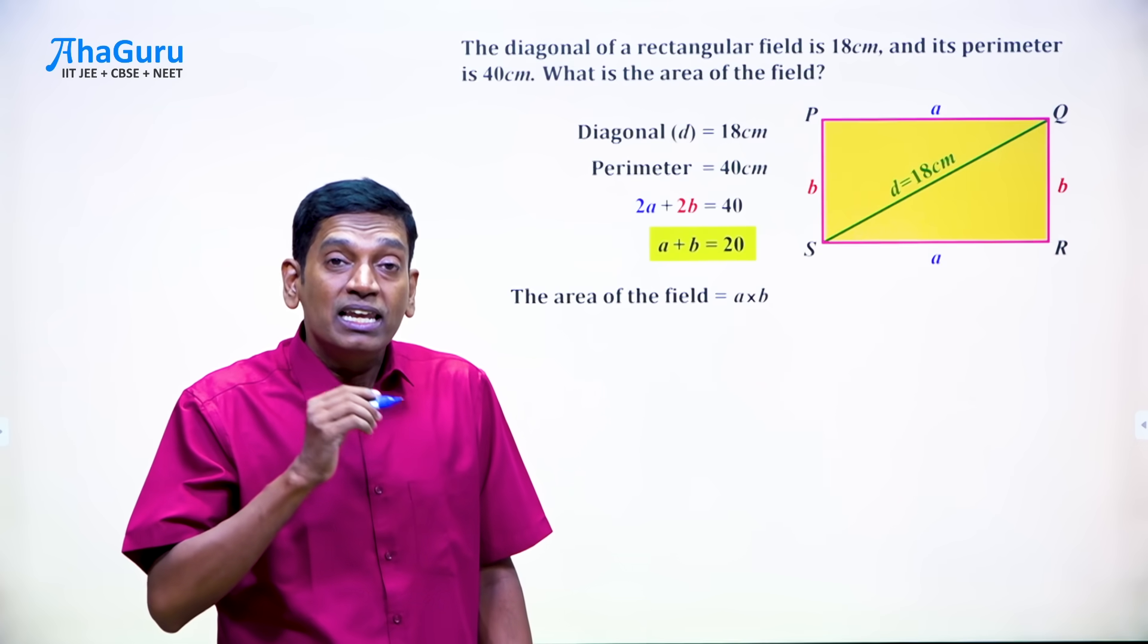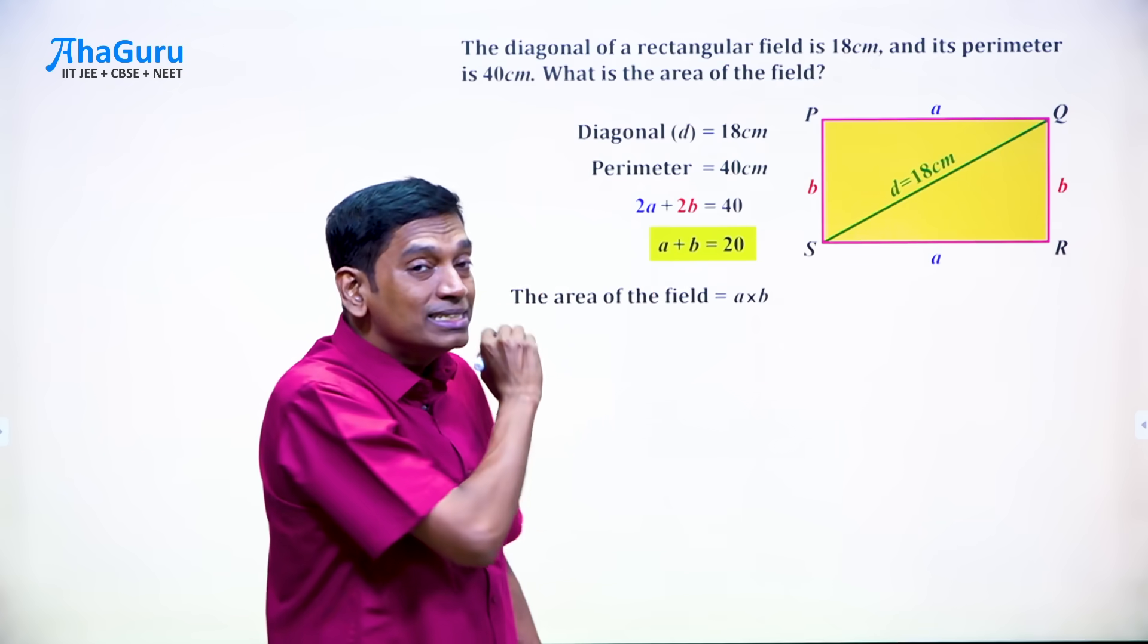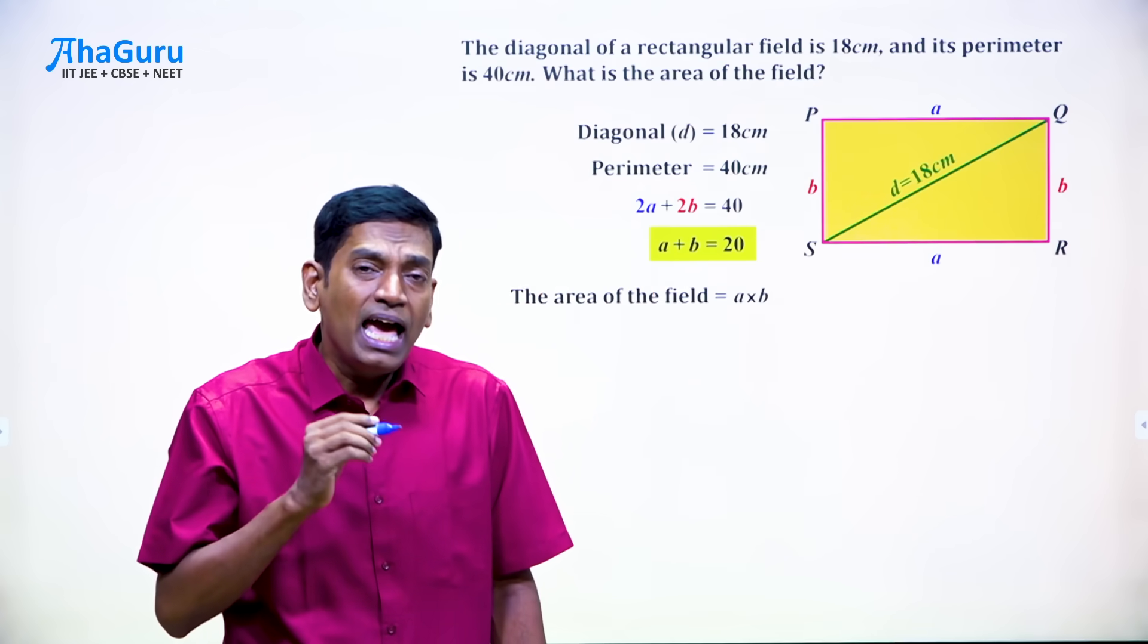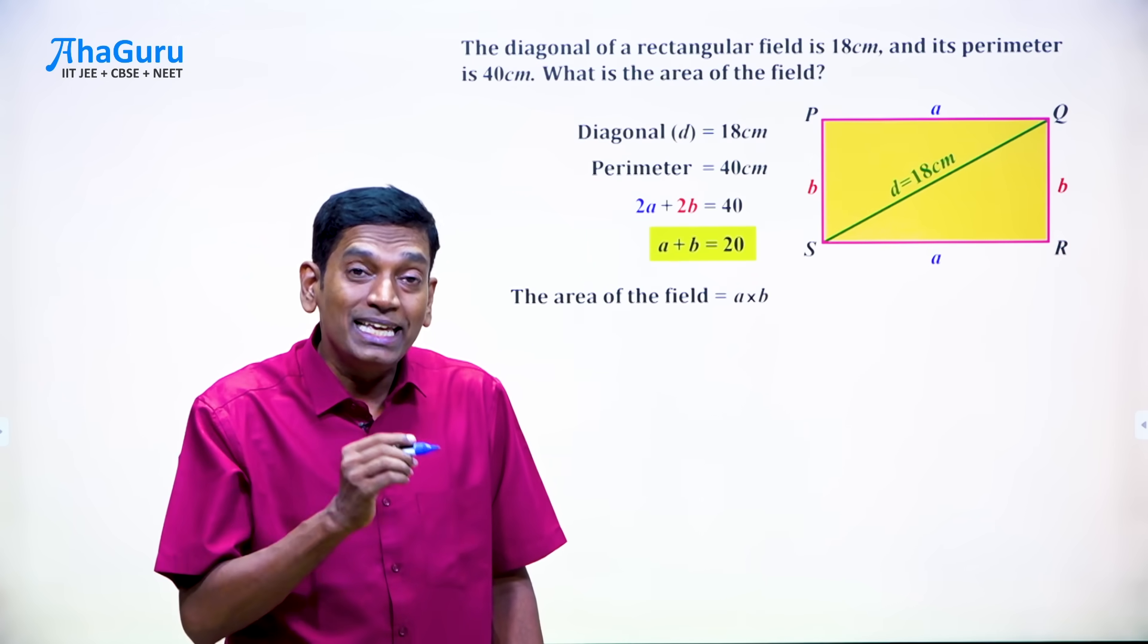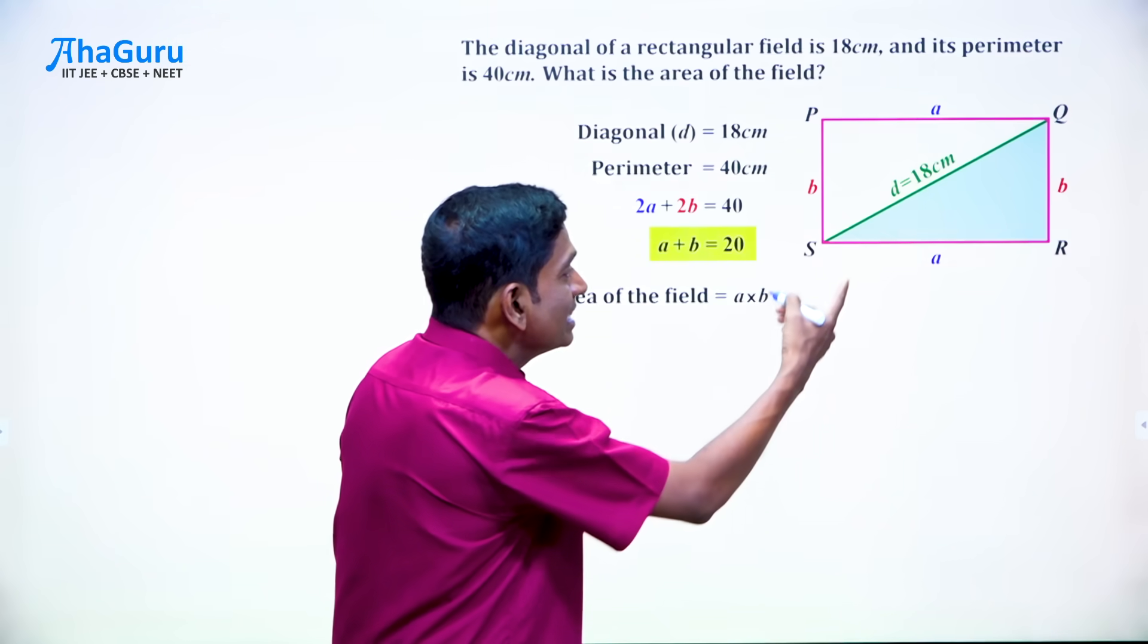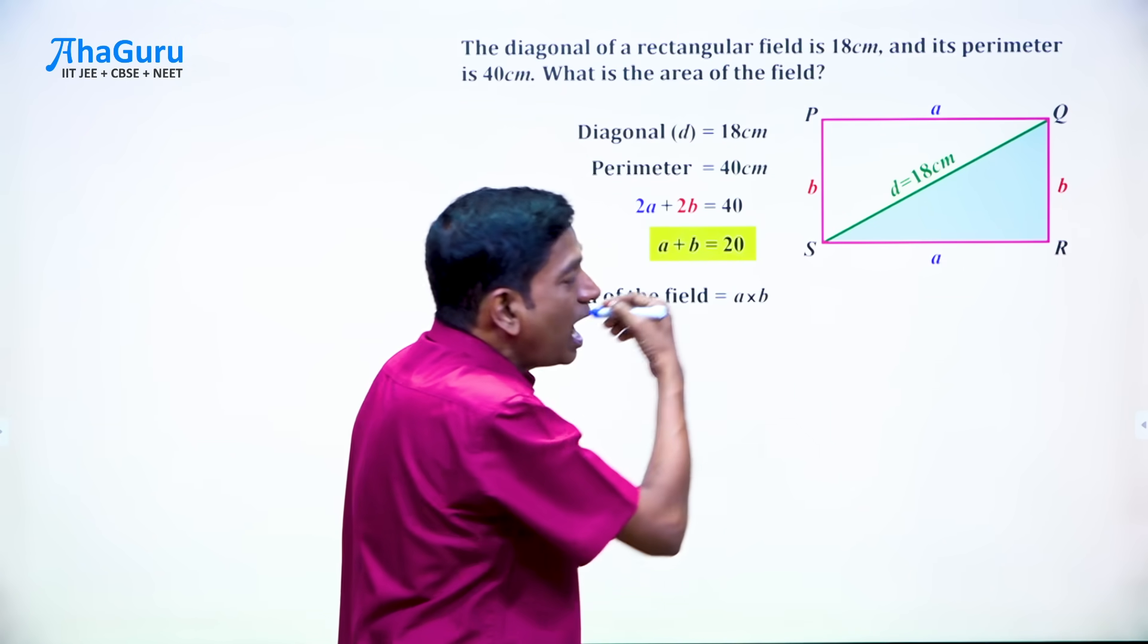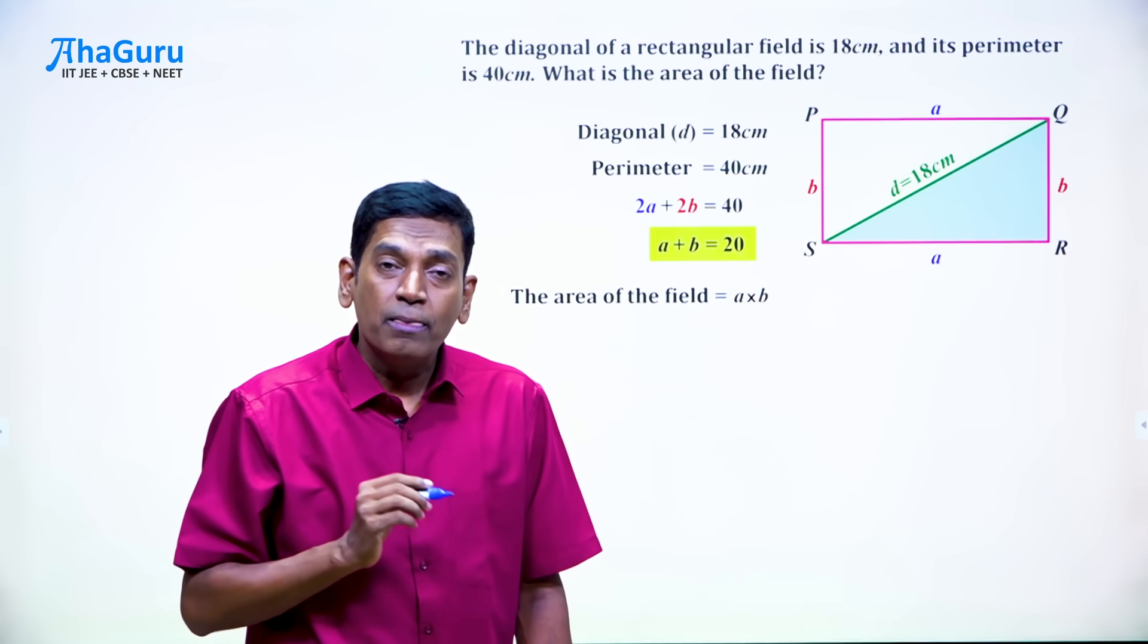Okay, let's see what other information is given to us. We are told that the diagonal is 18 and we haven't used that information at all. So let's see how that is going to help us. Now if you see this triangle QRS, what can we say about this triangle?